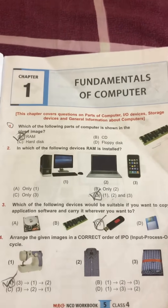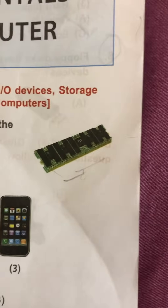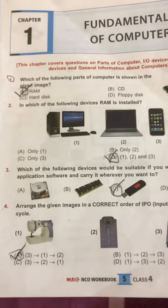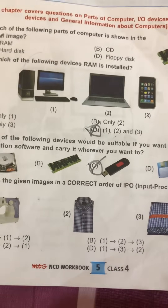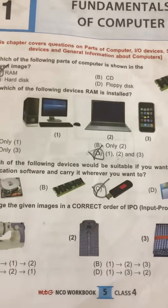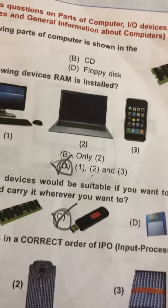Which of the following parts of the computer is shown in the given image? This is the RAM of the computer. If anything looks like this, it is the RAM of the computer, as RAM is rectangular. So the correct option is Option A: RAM. In which of the following devices is RAM installed? In devices like computers, laptops, and phones, RAMs are installed. So the correct option will be Option D: 1, 2, and 3, as they are showing all.